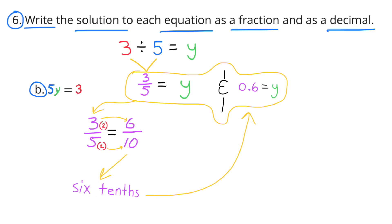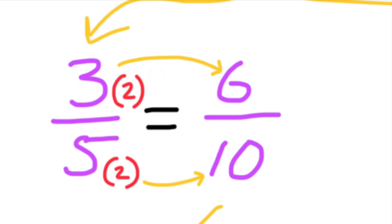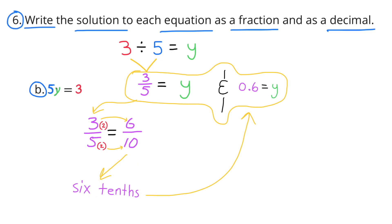B: 5y equals 3. That can be rewritten as 3 divided by 5 equals y, which is 3 fifths. 3 fifths is the same as 6 tenths — since 3 times 2 equals 6 and 5 times 2 equals 10 — and 6 tenths as a decimal is 0.6. So y equals 3 fifths, and y equals 0.6.